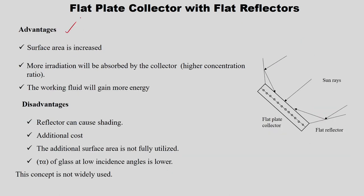On the advantages side, the surface area is increased because two more flat reflectors are provided. More radiation will be absorbed by the collector due to a higher concentration ratio relative to FPC. Compared to FPC, the concentration ratio is increased because we have added more surface area. The working fluid will gain more energy since we are getting more radiation.